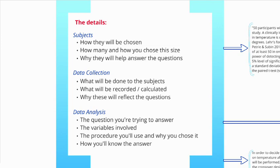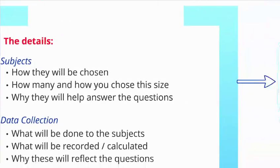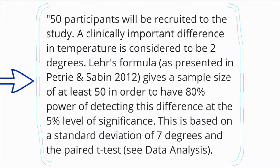Here is an example based on my classic chili experiment for how to choose your sample size: '50 participants will be recruited to the study. A clinically important difference in temperature is considered to be two degrees. Layer's formula as presented in Petrie and Savin 2012 gives a sample size of at least 50 in order to have 80% power of detecting this difference at the 5% level of significance. This is based on a standard deviation of seven degrees and the paired t-test.'